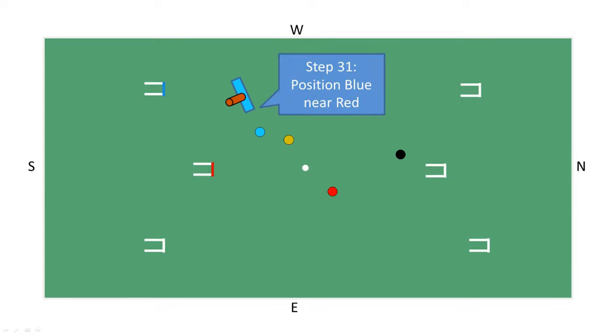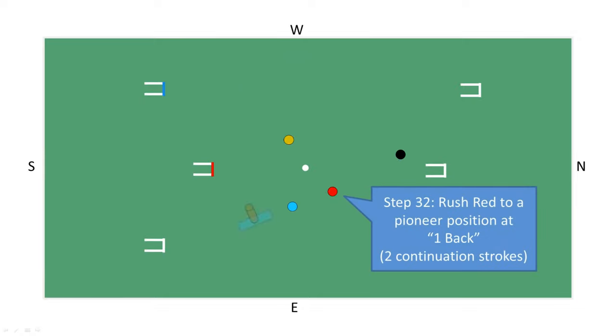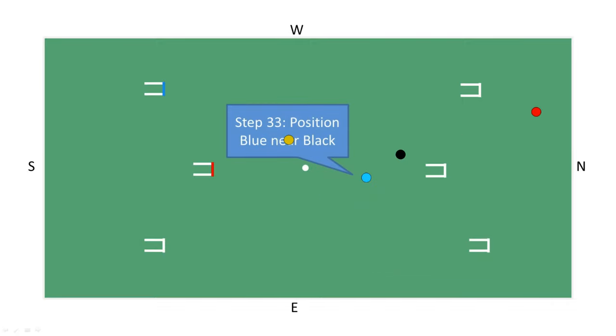And then positions itself near the red ball. Blue then rushes red to a pioneer position at one back, which are AC terms, or hoop 7 as it's called in GC.